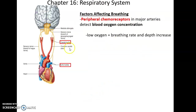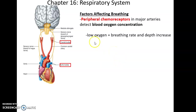Peripheral chemoreceptors check for other factors in the blood, specifically oxygen concentration. In general, low oxygen levels are not a huge concern because we're very efficient at getting oxygen into the bloodstream. However, there are receptors in the major arteries that inform the brain of oxygen levels. If oxygen gets too low, breathing rate and depth will increase. Carbon dioxide concentrations have a much greater effect on breathing rates than oxygen levels, but oxygen is important enough to have receptors devoted to it, and levels must be extremely low to stimulate this response.